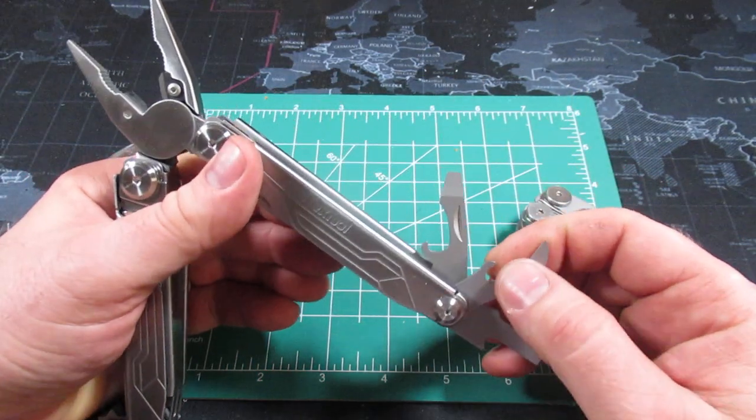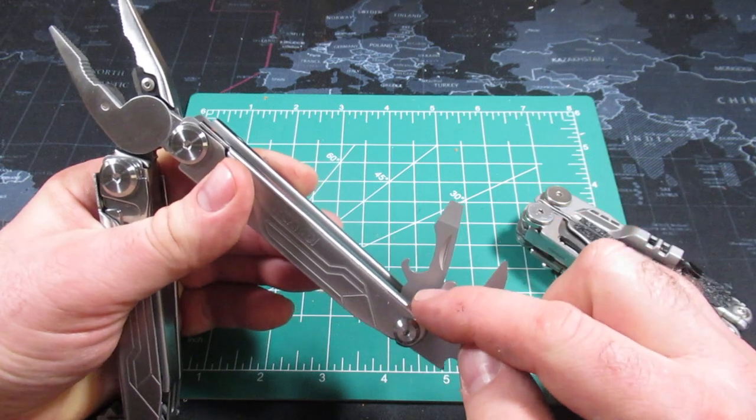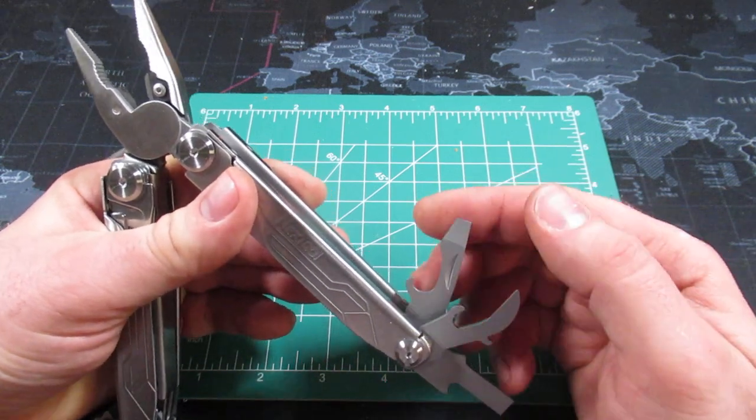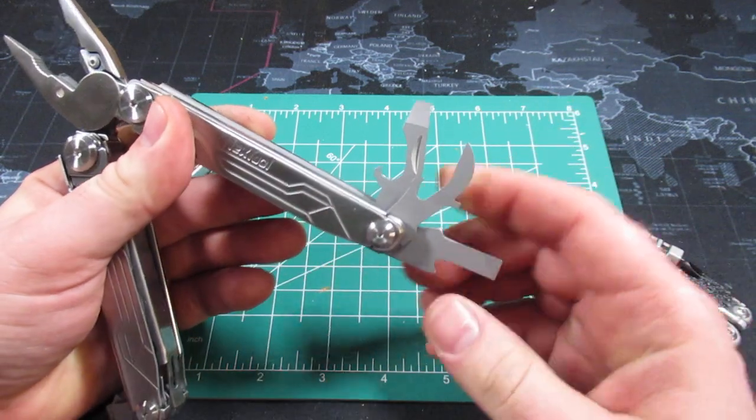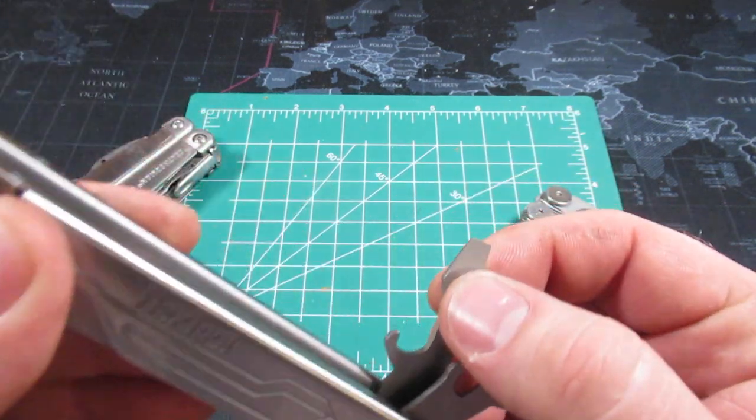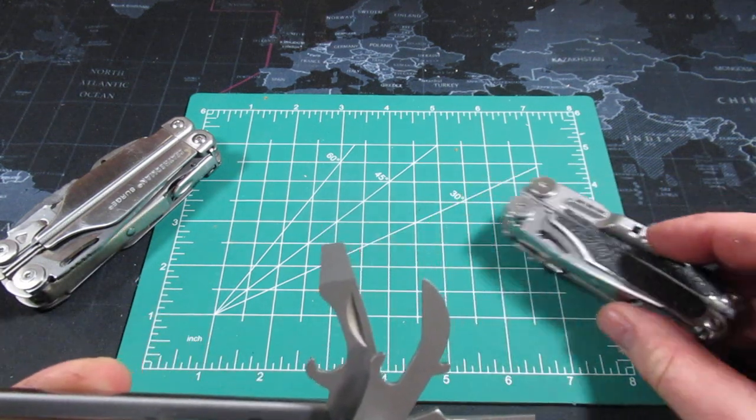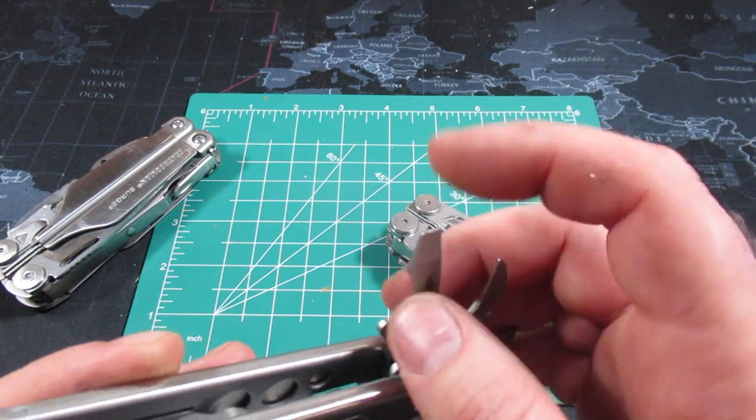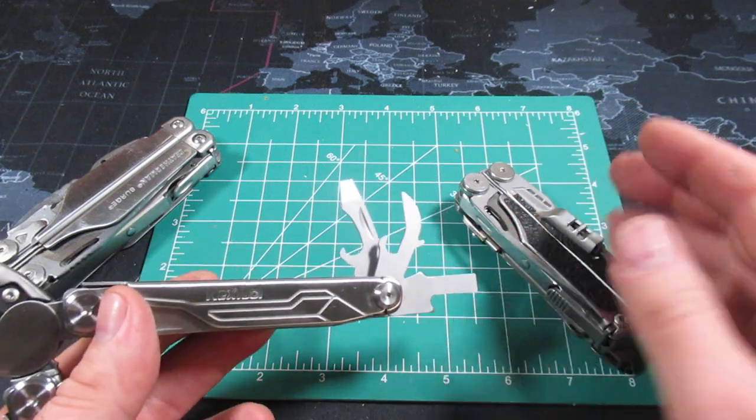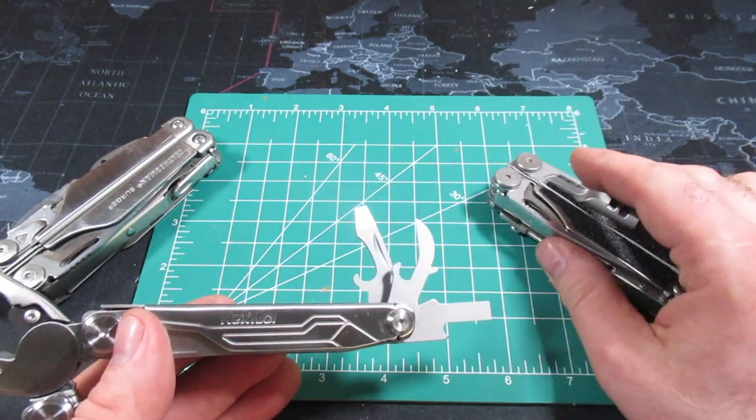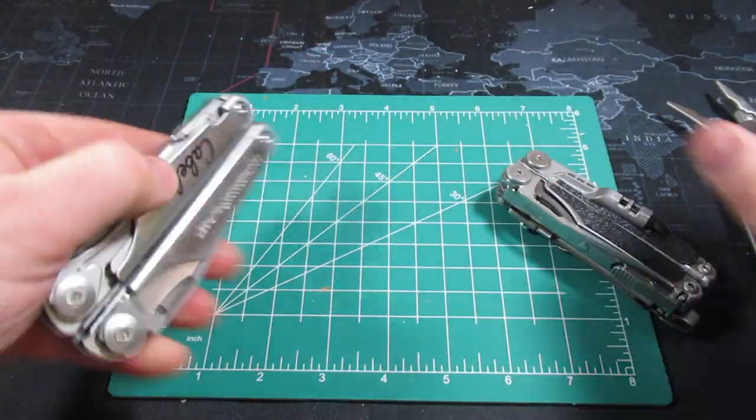So that's the one thing that Nextool does differently than Leatherman. Leatherman just has the can opener and the wire stripping notch. And Nextool has decided to add a can opener separate, and then a bottle opener with this screwdriver and a larger screwdriver. So the Leatherman Surge has their smaller screwdriver. The Leatherman Wave has a micro screwdriver, and this does not have either of those. And obviously it doesn't have the pair of scissors like the Wave does on the inside because they're on the outside.